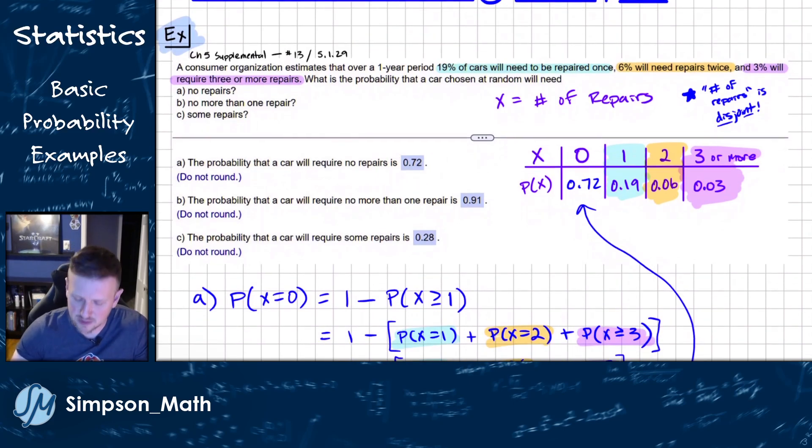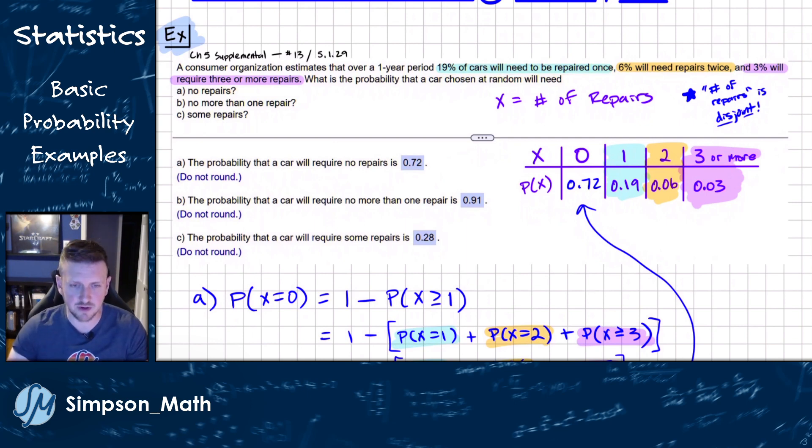Well, when I look at this question, I see that if a car is repaired once, that is disjoint from being repaired twice, which is disjoint from being repaired three or more times. So since these are disjoint, I can just add the probabilities up. I'm going to be using the addition rule for disjoint events like we covered in the last video.